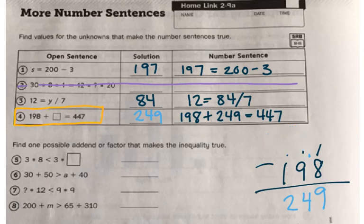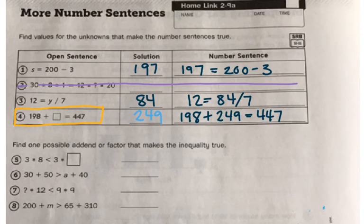So I'm going to go ahead and erase. Number five, it says find one possible addend or factor that makes the inequality true. So we don't have equal sign this time. Instead, we have less than, greater than, less than, and greater than. So I would like you to write the equation. Three times eight is less than three times. And you can go ahead and put that square in there. So three times an asterisk, and also means to multiply, is less than three times what number?